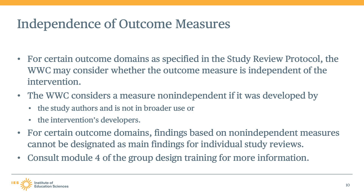A new outcome measure requirement in the 5.0 handbook is measure independence. The study review protocol specifies that some outcomes may require the outcome measure to be independent of the intervention. The WWC considers an outcome measure non-independent if it was developed by the study authors and is not in broader use, or if it was developed by the intervention's developers. For some outcome domains, findings based on non-independent measures cannot be designated as main findings. For additional information, consult Module 4 of the Group Design Training.